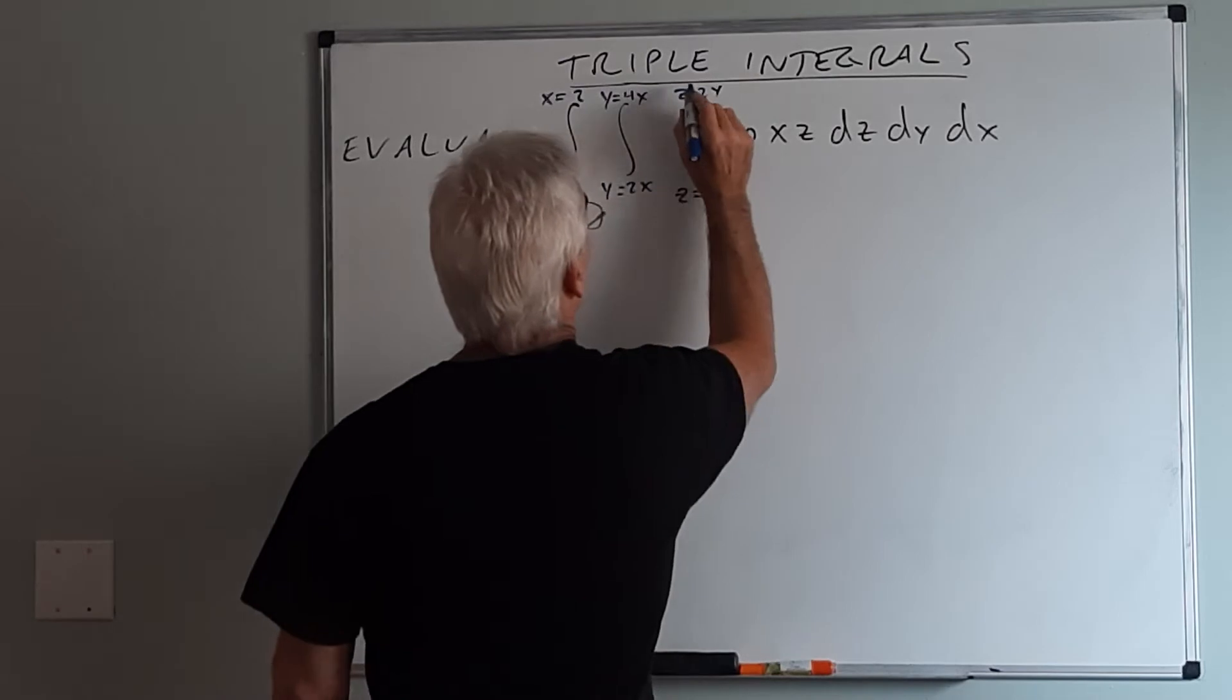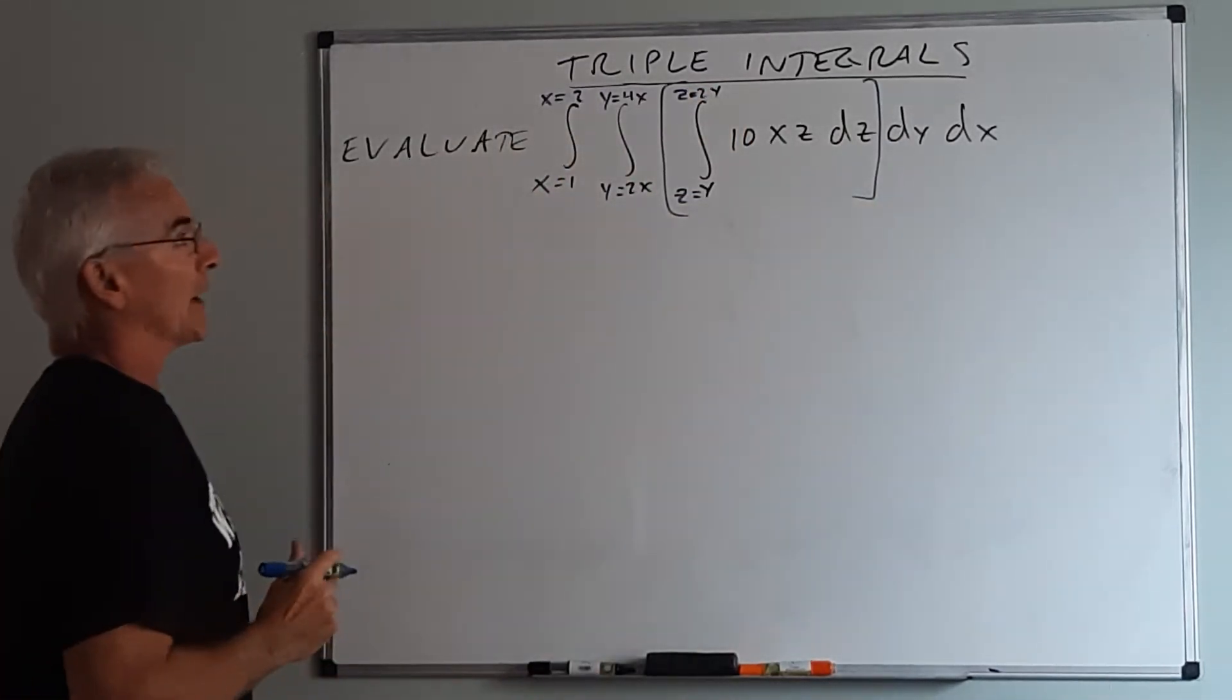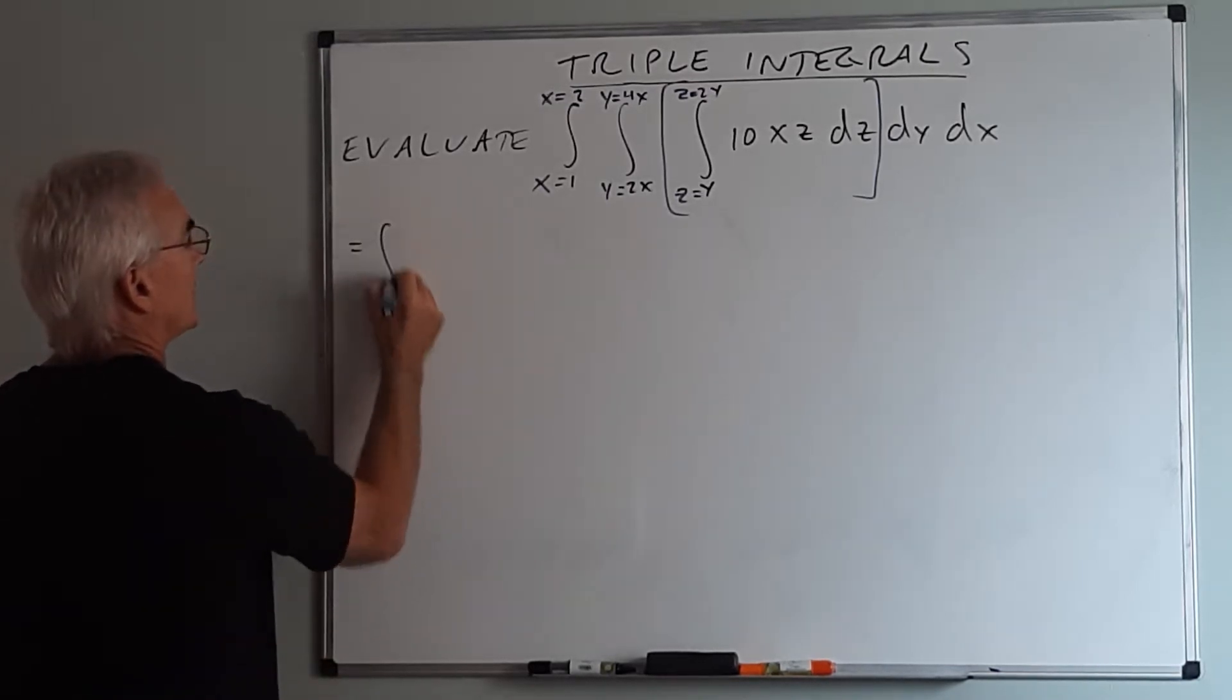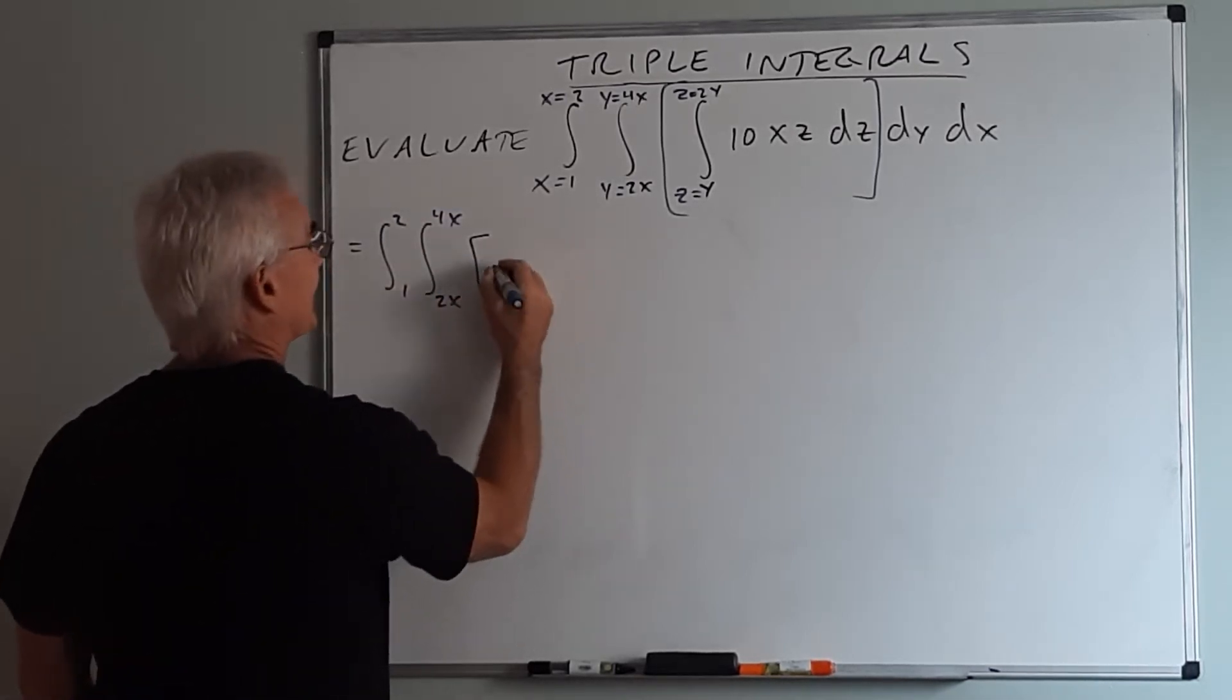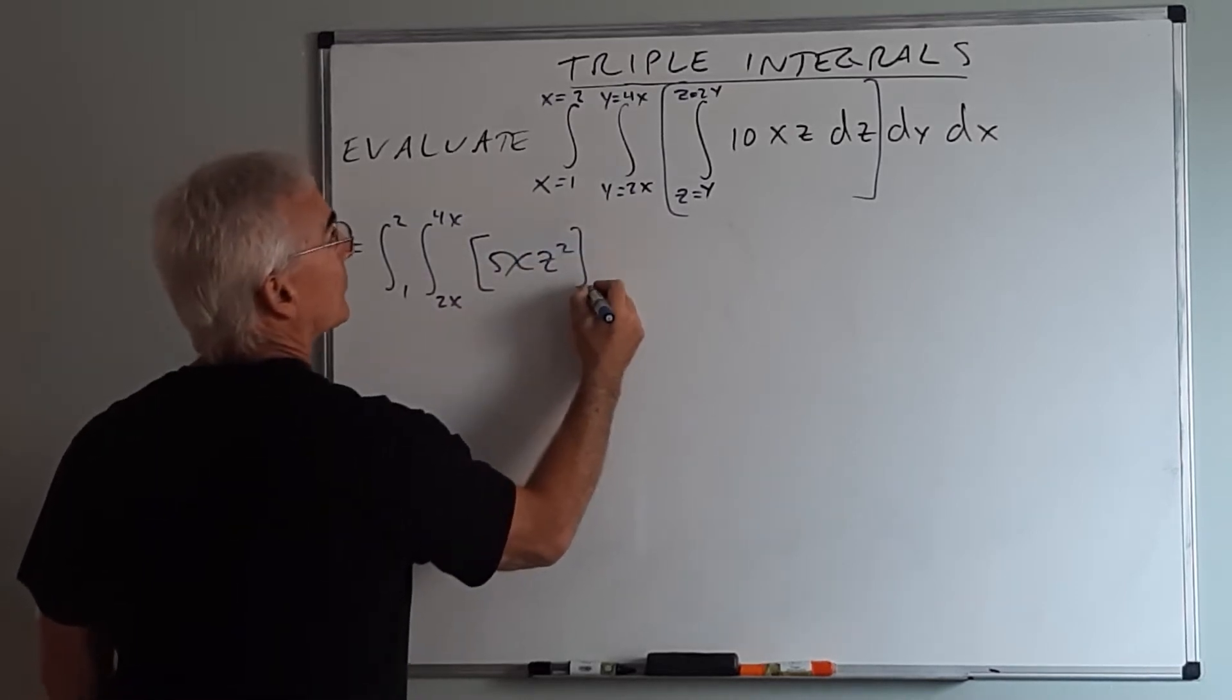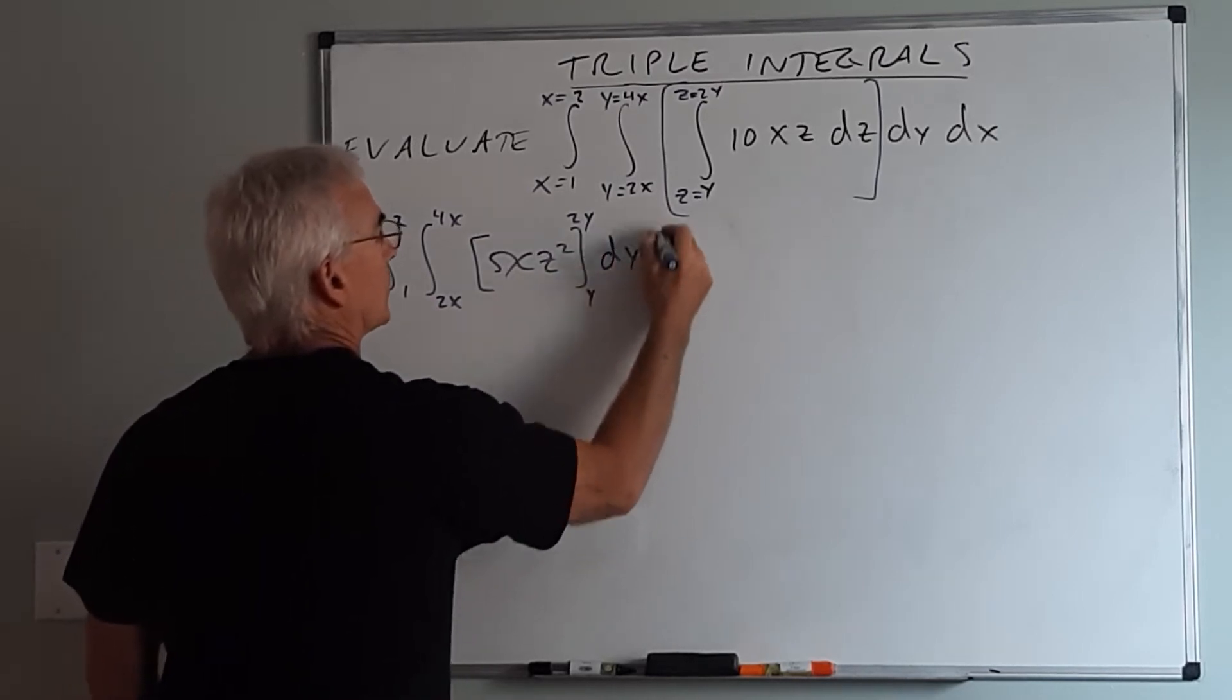Now also remember you're working inside out. So you're actually performing this integration first. Everything else just comes along for the ride. So from here 1 to 2, 2x to 4x. Now the antiderivative with respect to z, 5xz squared, from z equal y to z equals 2y dy dx.